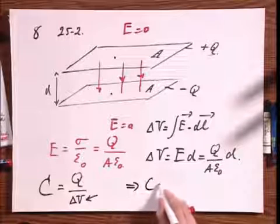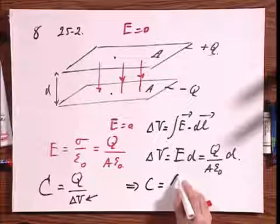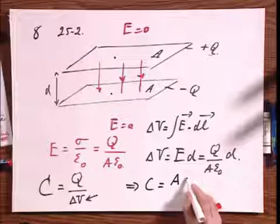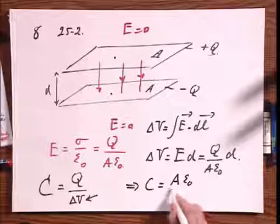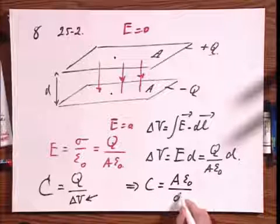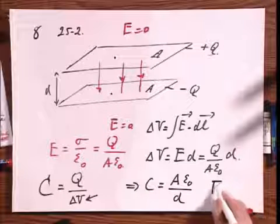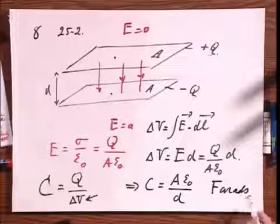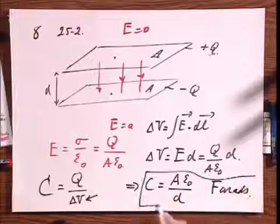you should be able to show very easily that for a plane capacitor, the capacitance is A times epsilon zero divided by d. And the unit is in farads in SI units.